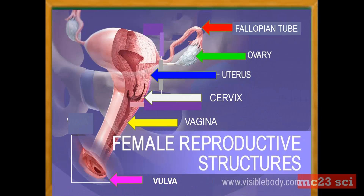For the side view cut, in red that is the fallopian tube. In green, that is the ovary. In blue, that is the uterus. In white, that is the cervix. In yellow, the vagina. And in pink, the vulva. This is the side view cut.